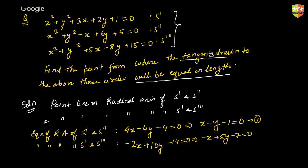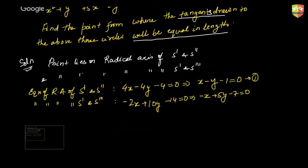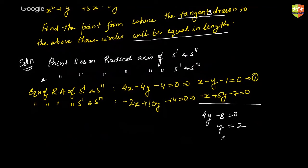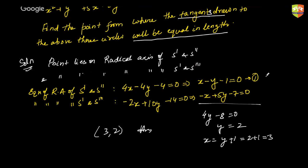Adding the two equations gives 4y − 8 = 0, so y = 2. If y = 2, then x = y + 1 = 3. So the point is (3, 2). Absolutely correct! So thank you all for coming online — over and out from Centrum Academy. The next session will cover more radical axis properties and then we'll start with the concept of parabola.